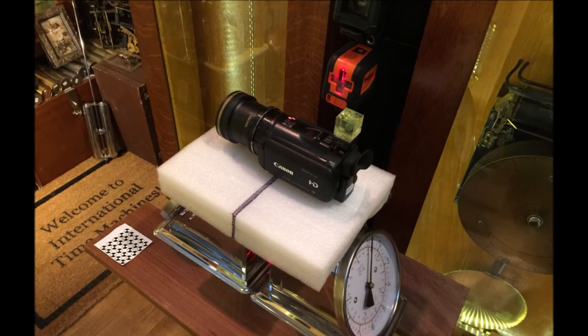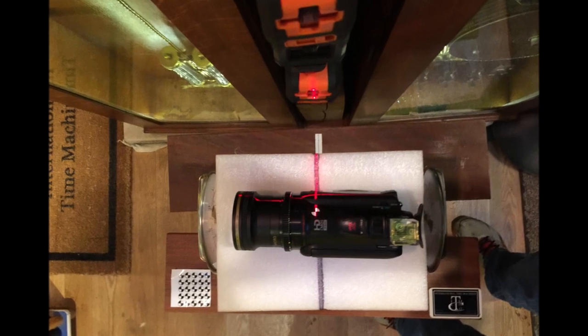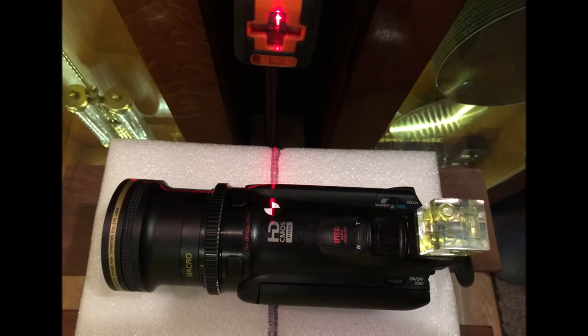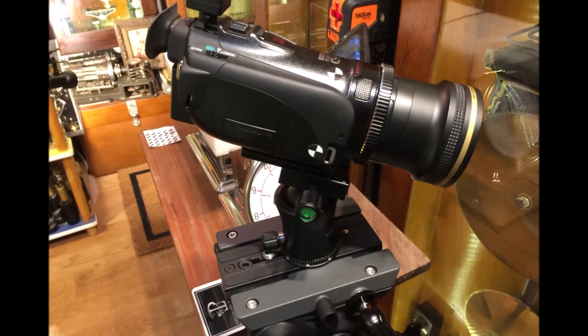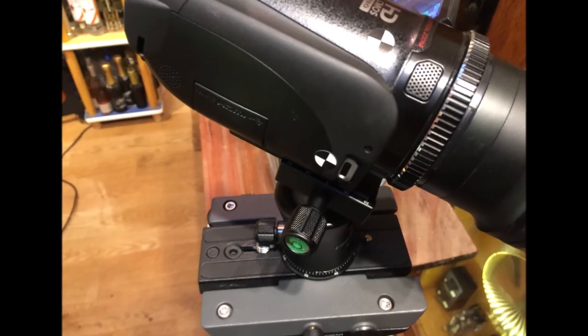The center of gravity machine is also useful in finding the center of gravity for other devices, such as this video camera. Keeping the camera center of gravity over the pivot point helps in a smoother operation in videography.